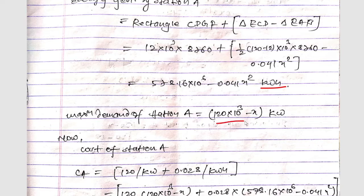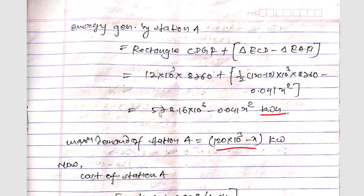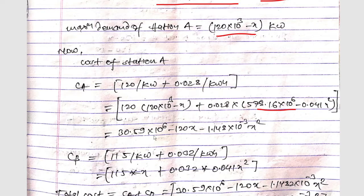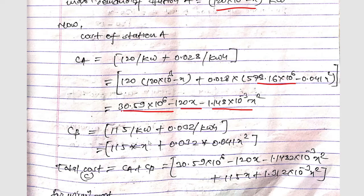The maximum demand of station A is (120 × 10³ − X) kilowatts. The cost of station A is: CA = 120 × (120 × 10³ − X) + 0.028 × (578.16 × 10⁶ − 0.041X²), which gives CA = 30.59 × 10⁶ − 120X − 1.148 × 10⁻³ X². Similarly, CB = 115 × X + 0.032 × 0.041X², where EB = 0.041X².